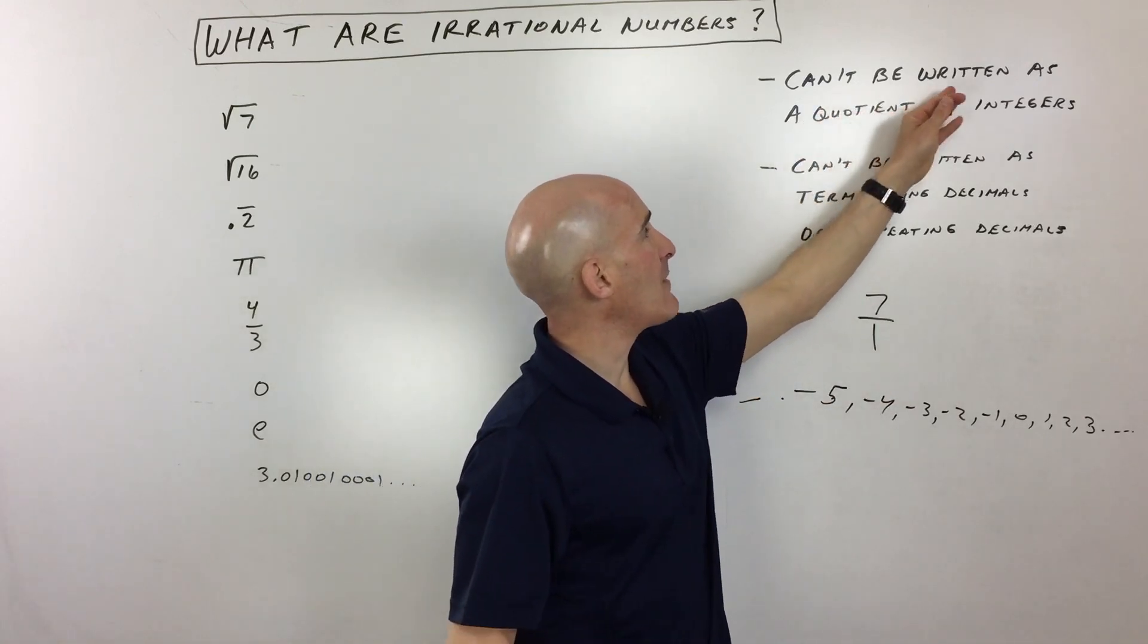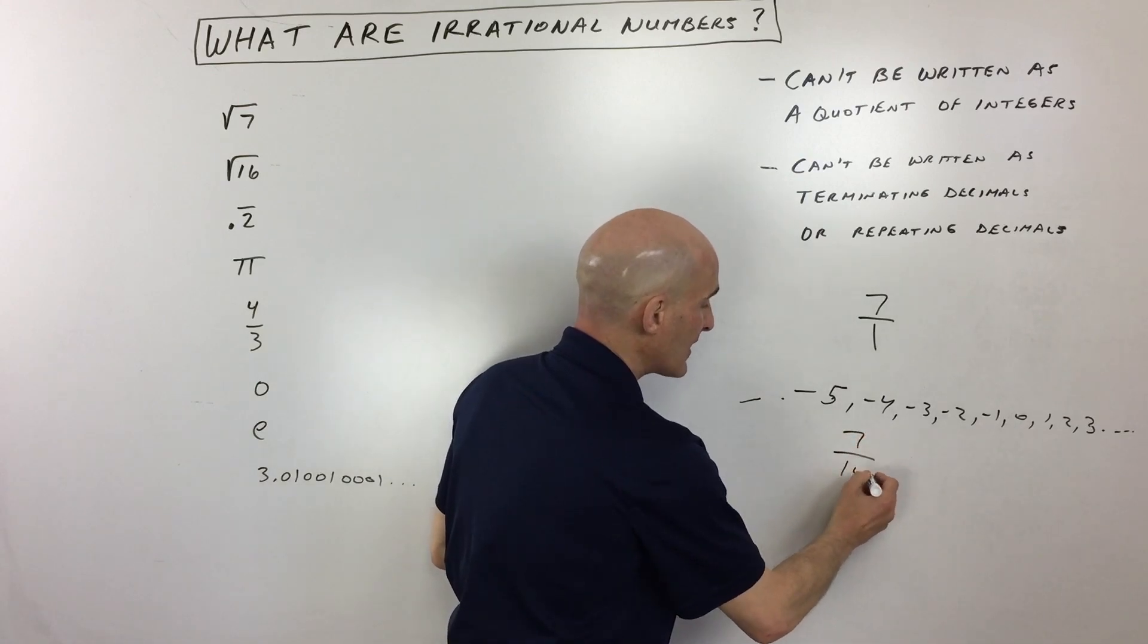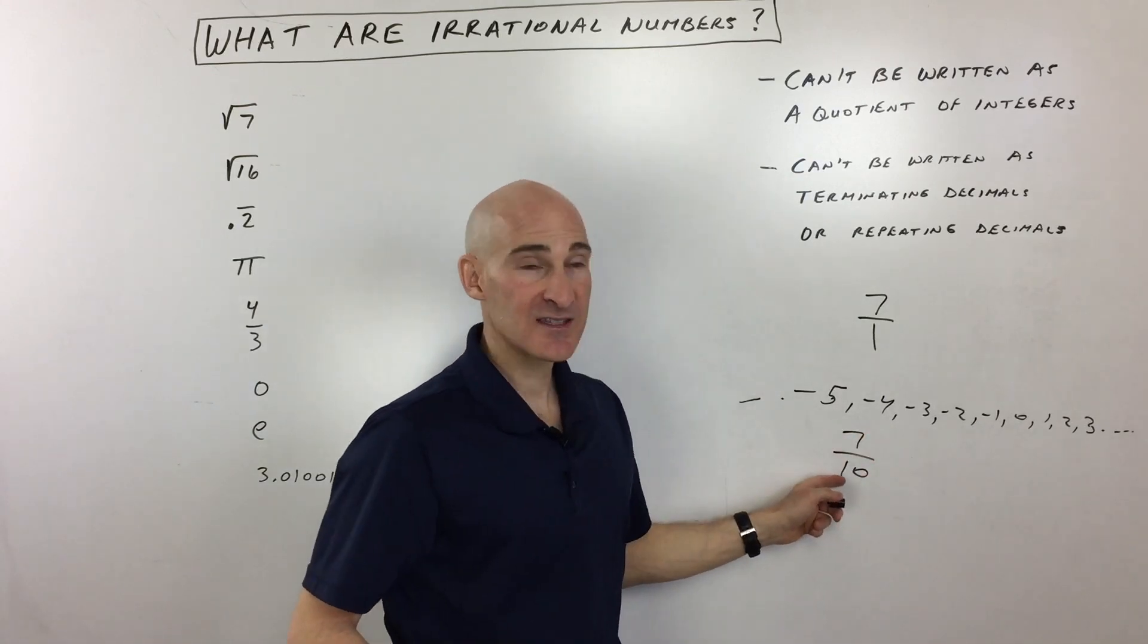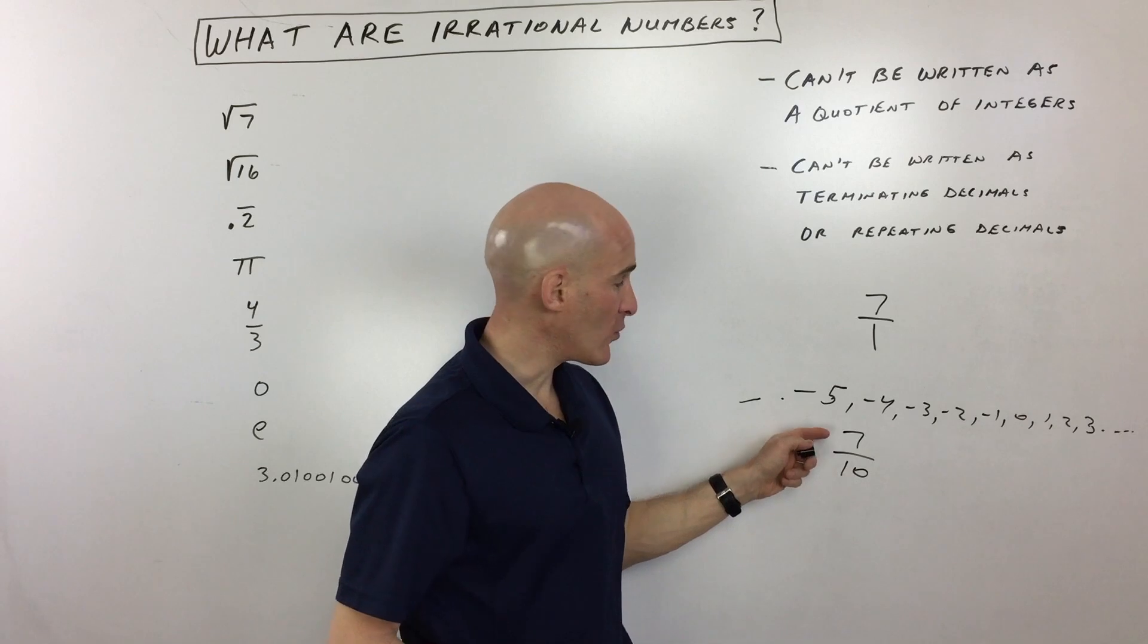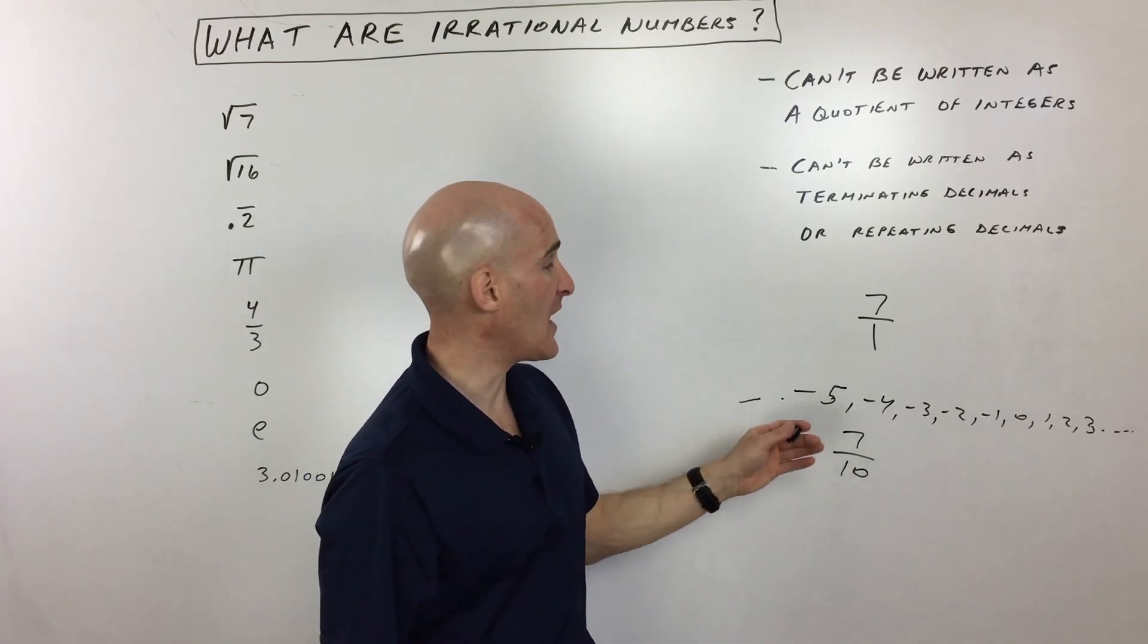And so if it can't be written as a quotient of integers, say for example like 7 divided by 10, see these are both integers, this is considered a rational number. It's a ratio, okay, of two integers, all right? So that's rational, not irrational.